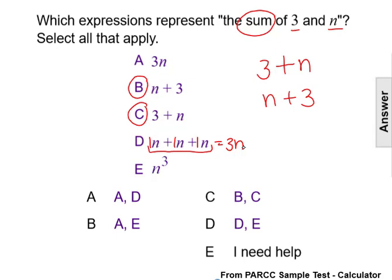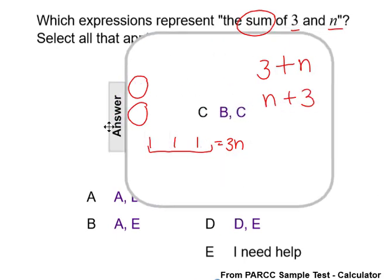Also, A is a product, and n to the third—that's n times n times n. That's multiplication, which is again not a sum. So our answer is choices B and C, which looking at the options, both choices of B and C is answer choice C.